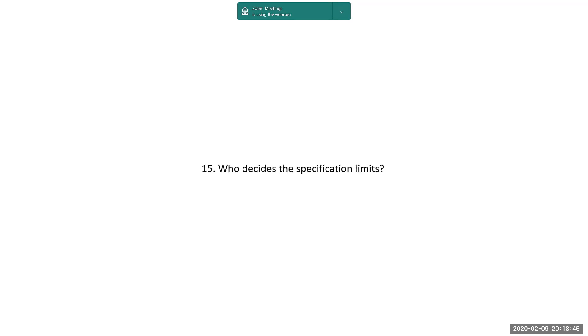Who decides the specification limits? The process itself limits — control limits are specified by the process itself. So the process should be improved so that the specification limits are obtained. What decides control limits? As I said, the process.